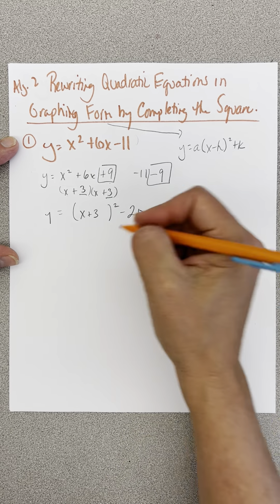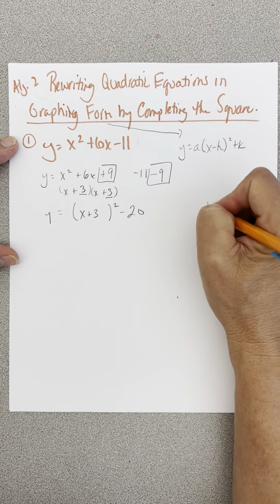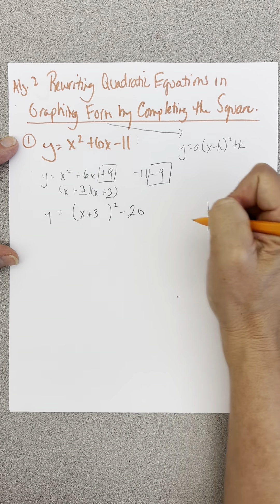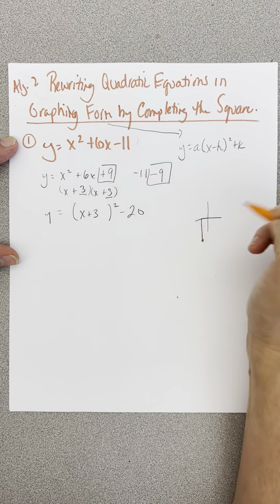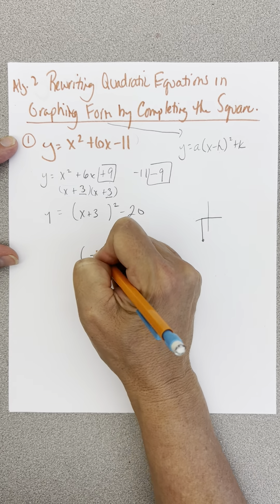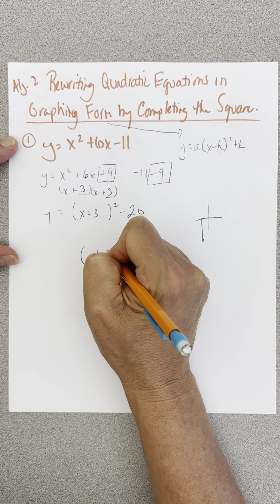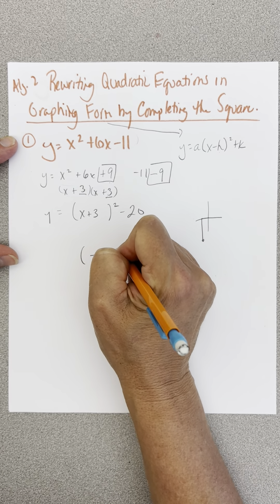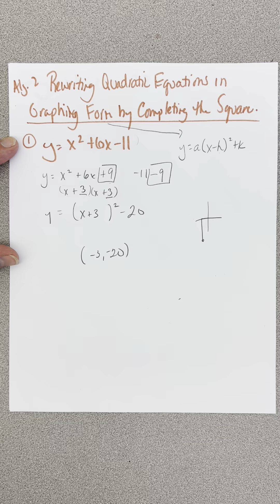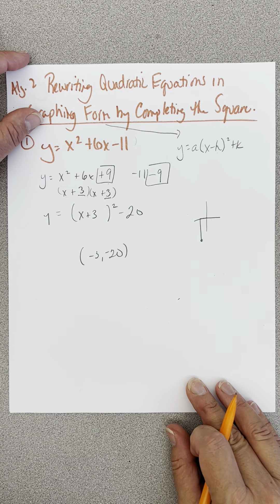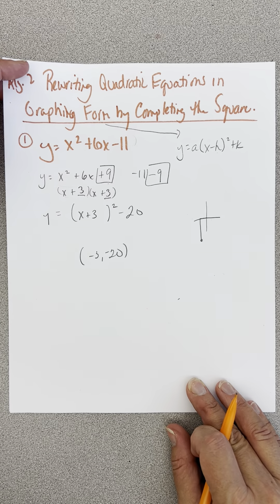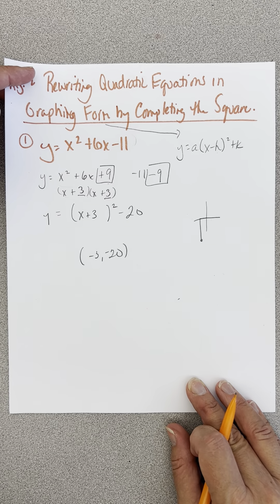Therefore, my vertex — think about it — we go to the left 3, and then down 20. My vertex is at negative 3, negative 20. And we could verify that with our calculator. So that is the process of completing the square.